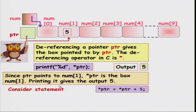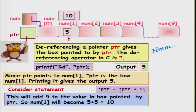Now consider a statement like *ptr = *ptr + 5. This is perfectly legal. *ptr is an integer value — it equals 5 because looking up the location ptr gives 5. So this will be 5 + 5 = 10, and where do you store it? You store it in the integer variable corresponding to *ptr, which is num[1]. I would normally say num[1] = *ptr + 5, but num[1] is the same as *ptr. So I can say *ptr = *ptr + 5, which looks up that location, adds 5 to its contents, and stores it there. So num[1] will now become 10.